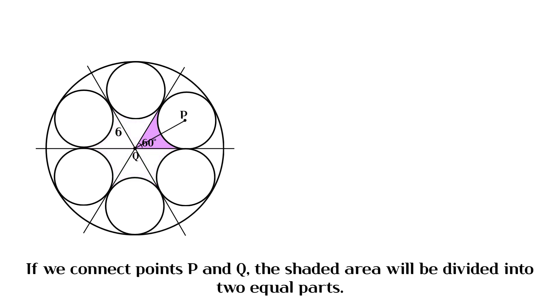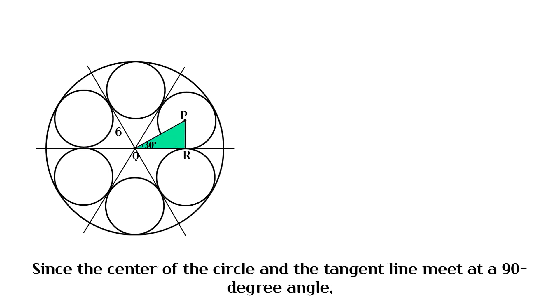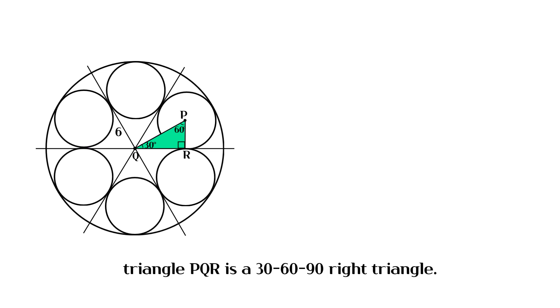If we connect points P and Q, the shaded area will be divided into two equal parts. Since the center of the circle and the tangent line meet at a 90-degree angle, triangle PQR is a 30-60-90 right triangle.